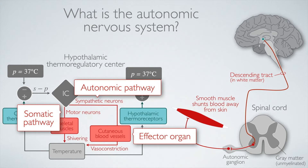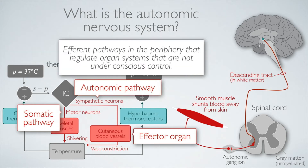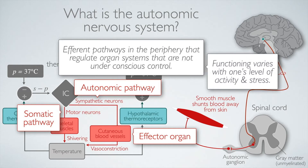Let's start with a generic definition. The autonomic nervous system includes efferent pathways in the periphery — not the central nervous system — that regulate organ systems not under conscious control. That excludes the somatic pathway. Among the three autonomic pathways, they are recruited depending on your body's level of activity and stress.